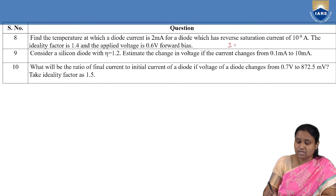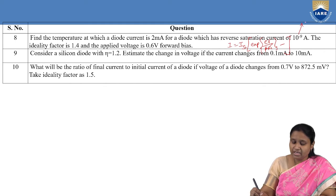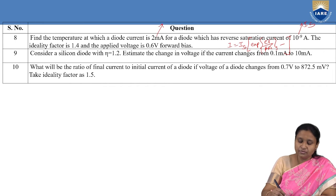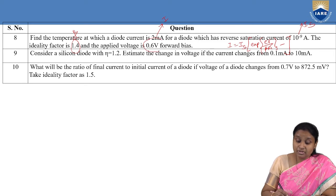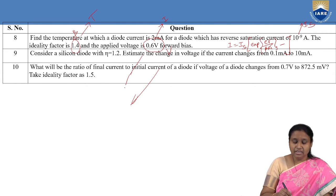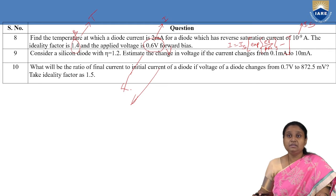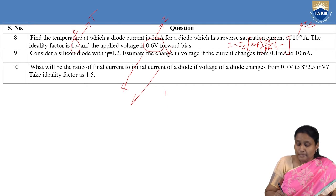In the eighth problem, using the same diode equation I = IS × exp(eV/βkT) − 1, values of IS, I, β, and forward voltage V are given, but we need to find temperature T by rearranging the equation. In the ninth problem we need to find the change in voltage ΔV, and in the tenth problem we need to find the ratio of final current to initial current I₂/I₁.